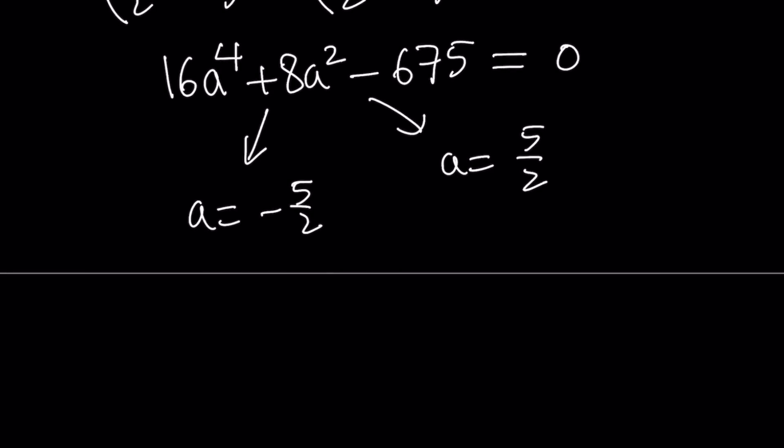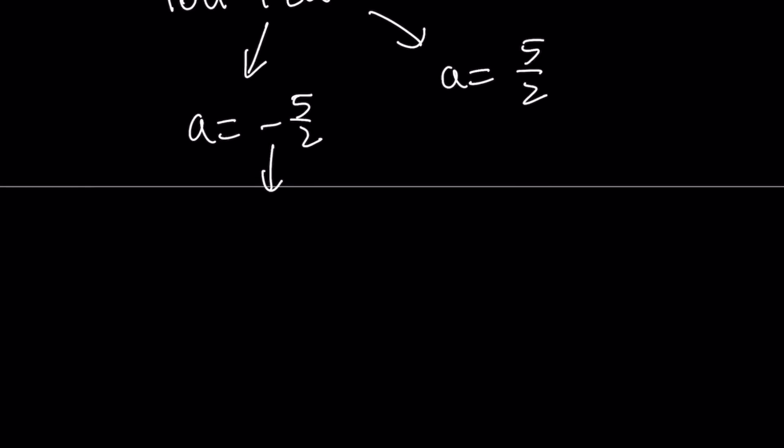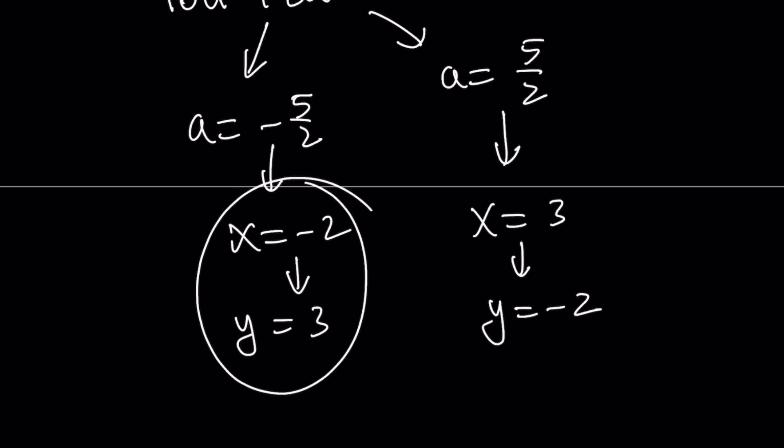And then obviously the others are easy to find. But anyways, a equals negative 5 halves means what? It means x equals 1 half plus a. So you're just going to add 1 half minus 5 halves. That's going to be negative 4 halves, which is negative 2. So from here, x is going to be negative 2. And this is going to be 1 half plus 5 halves, which is 3. So x is going to be 3. But remember, x plus y is 1. Their sum is 1. So if x equals negative 2, then y is going to be 3. If x is 3, y is going to be negative 2. So it's kind of like vice versa. So those are going to be the pairs.